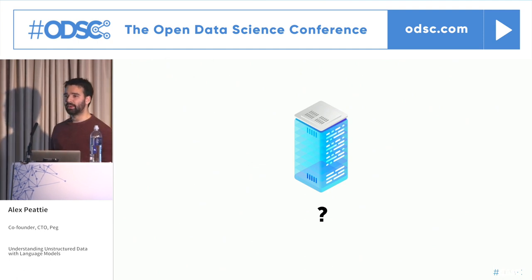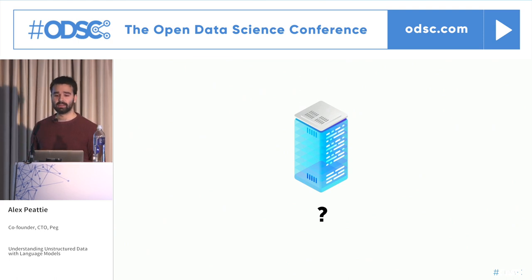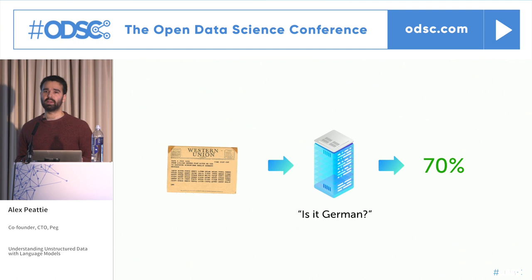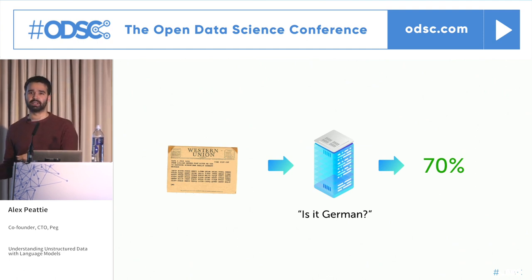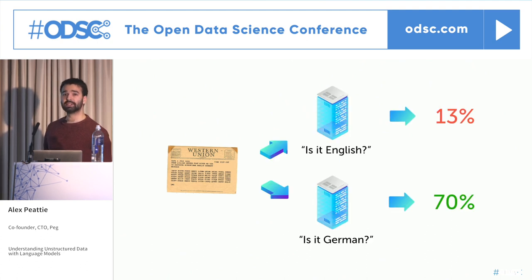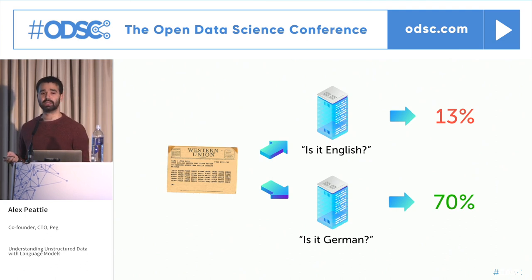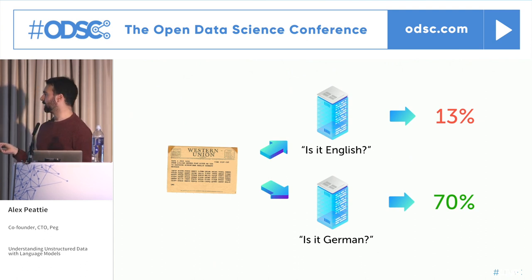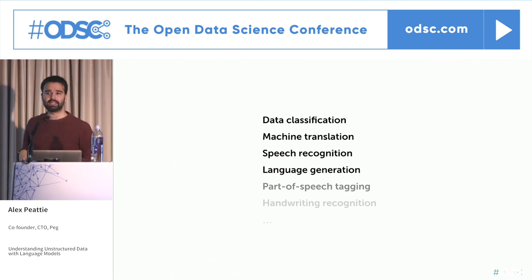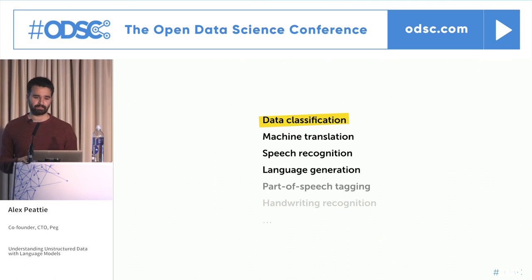What actually was this language model? Fundamentally, it's about likelihoods: we feed the model a potential decryption and ask, what's the likelihood this is a German message? And it gives us a likelihood back. A very common thing now is to use multiple language models in concert — if we're sorting texts into English and German, we might use two language models, an English and a German one, and use the highest likelihood to decide. Since language models were pioneered by Turing, they've gone on to be used in many different applications. But today we're mainly focusing on using language models for classifying and understanding data.